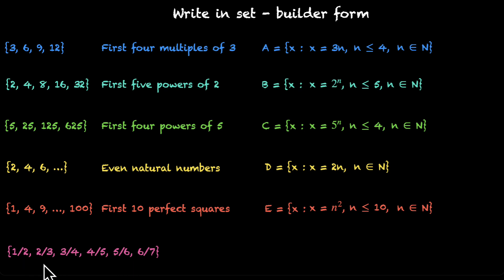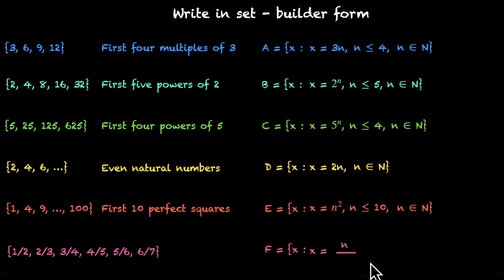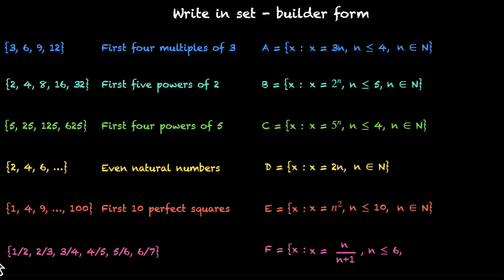The last one: we have 1/2, 2/3, 3/4, 4/5, 5/6, 6/7. What's the pattern here? The denominator is one more than the numerator, and we are taking these six numerators: 1, 2, 3, 4, 5, 6. So we are looking for all x such that x is in the form n/(n+1) — we have taken the numerators as n, and the denominators automatically become n+1. What values can n take? n can take these six values, so n is less than or equal to 6. But to make sure that n takes only these six values, we restrict n to natural numbers, so n belongs to natural numbers. If we don't restrict n to natural numbers and only say n is less than or equal to 6, n could also take values like 5.5, 2.3, and so on. Because we only want natural numbers, we have to mention that as well.